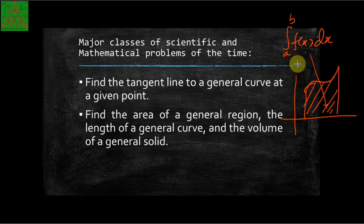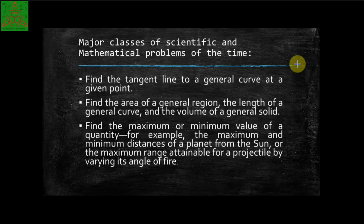So these are the main two problems. In the literature there are also other problems. The third one is finding the maximum or minimum value of a quantity, for example, the maximum and minimum distance of a planet from the Sun or the maximum range attainable of a projectile at various angles of fire.